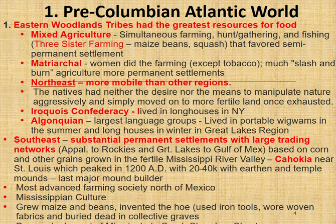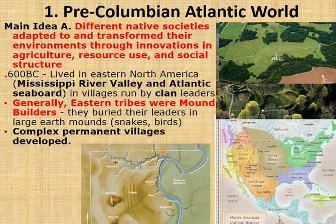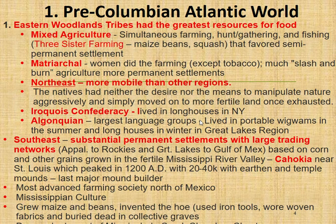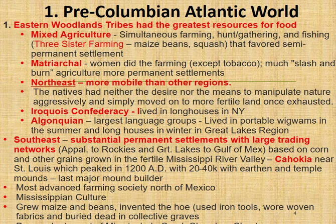Two tribes associated with the northeastern woodland are the Iroquois Confederacy — in what is today the state of New York, who often lived in longhouses — and the Algonquin-speaking people, a language group around the Great Lakes. Moving to the southeastern region, these were more substantially permanent settlements with large trading networks, due to their access to the Mississippi River and its tributaries.